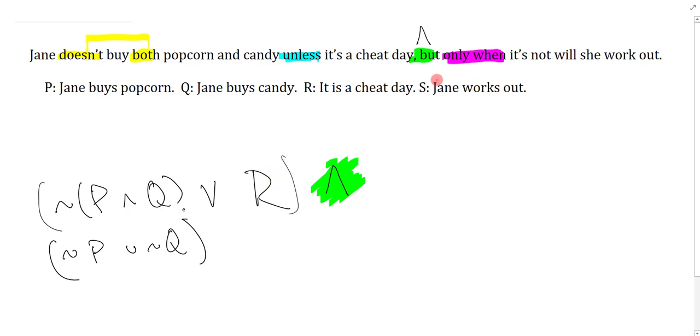Now I have to do only when it's not will she work out. So only when is only if it's not. One of the key tricky words here is the it - this is a reference term pointing to the last clause, which is cheat day. So it's not really means if it's not a cheat day.